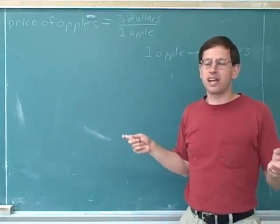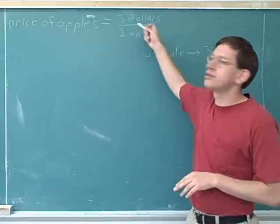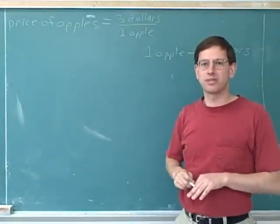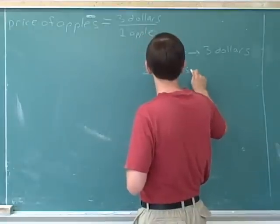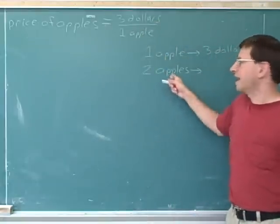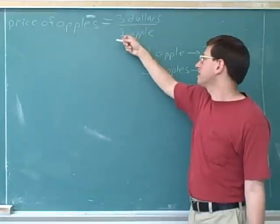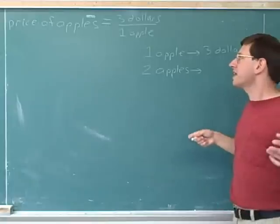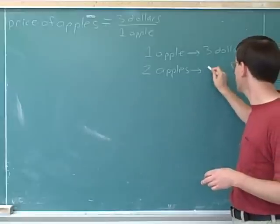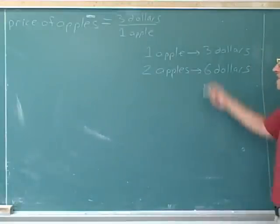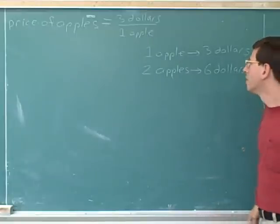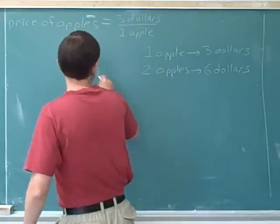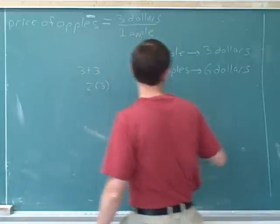Obviously, if you're accustomed to prices, you know that prices actually give you very useful information. Even though the price only tells you directly how much it would cost to buy one apple, it's very easy once you know the price to figure out how much it would cost to buy any number of apples. For example, let's say you actually decided to buy two apples — how much would that cost? Well, this ratio doesn't tell us directly; it only tells us directly how much one apple costs. The first apple costs three dollars and the second apple costs another three dollars, so the total is six dollars. You can figure this out as three plus three equals six, or as two times three equals six.